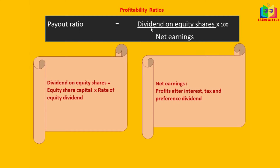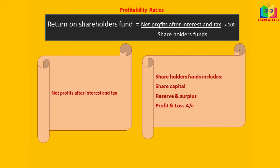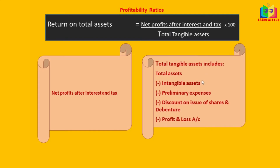Next is payout ratio: dividend on equity shares divided by net earnings, multiplied by 100. Net earnings is profit after interest, tax, and preference dividend. Dividend on equity shares is equity capital multiplied by rate of equity dividend. Return on shareholders fund is net profit after interest and tax divided by shareholders funds. Shareholders funds include equity share capital, preference share capital, reserves and surplus, and profit and loss — both equity and preference share capital are taken.